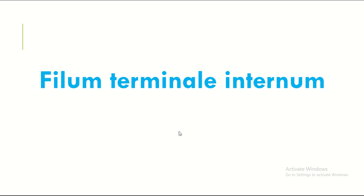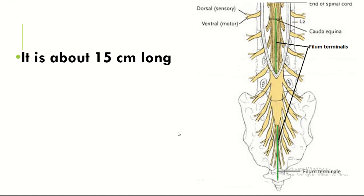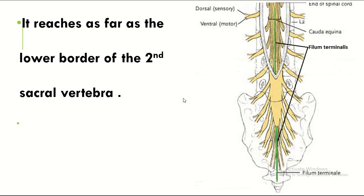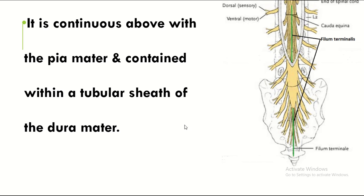Filum terminale internum: it is about 15 cm long. It extends as far as the lower border of the second sacral vertebra. It is continuous above with the pia mater and is contained within a tubular sheath of dura mater.